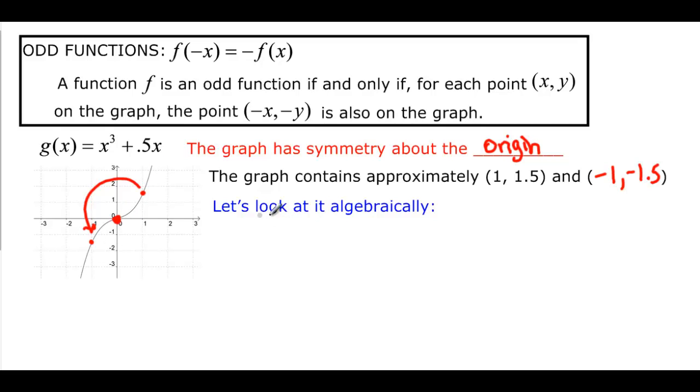All right, so the last thing we have to do then is look at it algebraically. So we have our f of negative x. This time, if we put in negative x, we should get the exact opposite function. So we have negative x being cubed plus 0.5 times negative x.